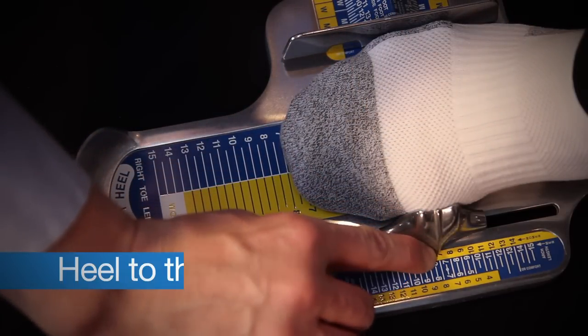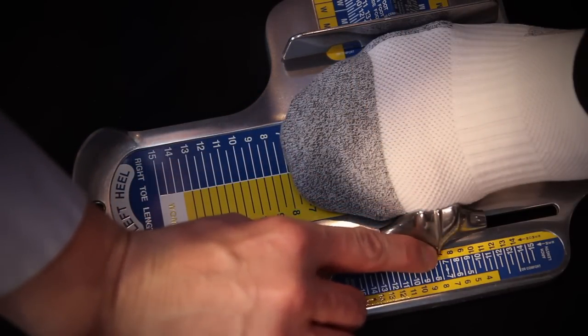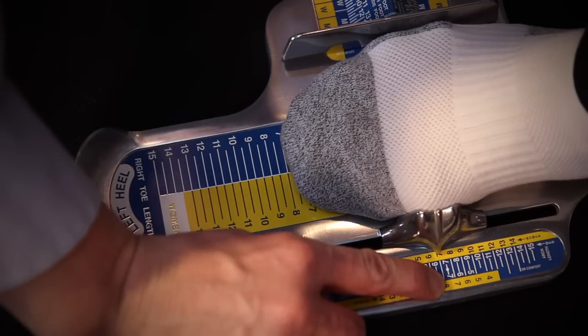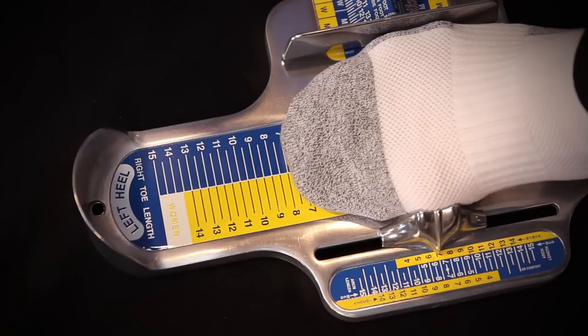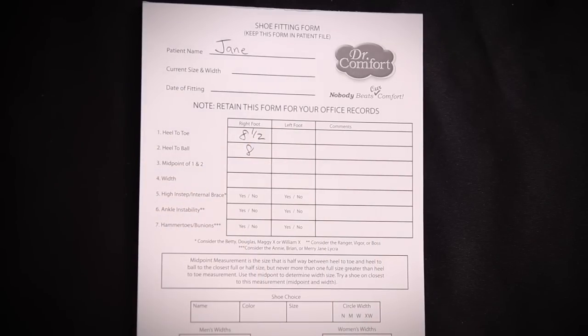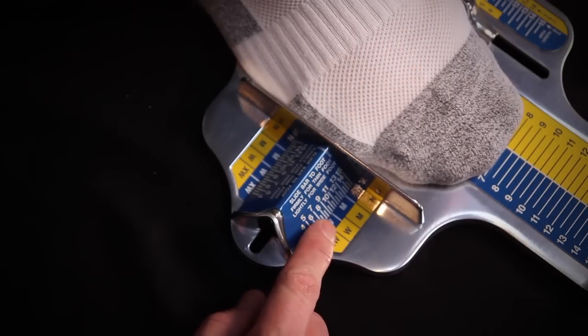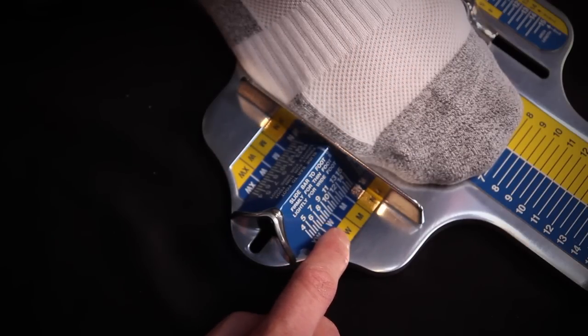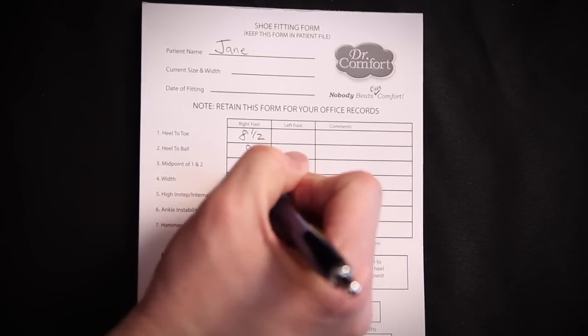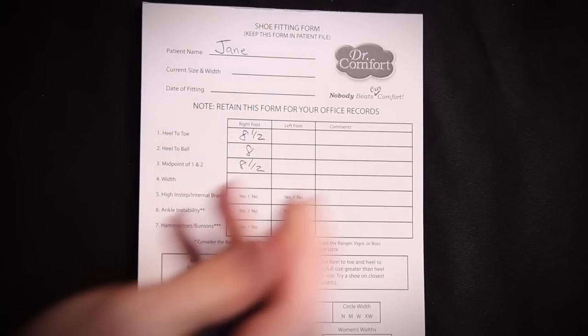Next is the heel to the longest arch. The arch is also known as the metatarsophalangeal joint or the ball of the foot. Reading numbers facing me and in yellow because Jane is a woman. The next is a midpoint measurement of taking this difference between the two, which is an eight and a half. I use the eight and a half to indicate the width on Jane's foot. In this case, it indicates that Jane is an eight and a half wide.